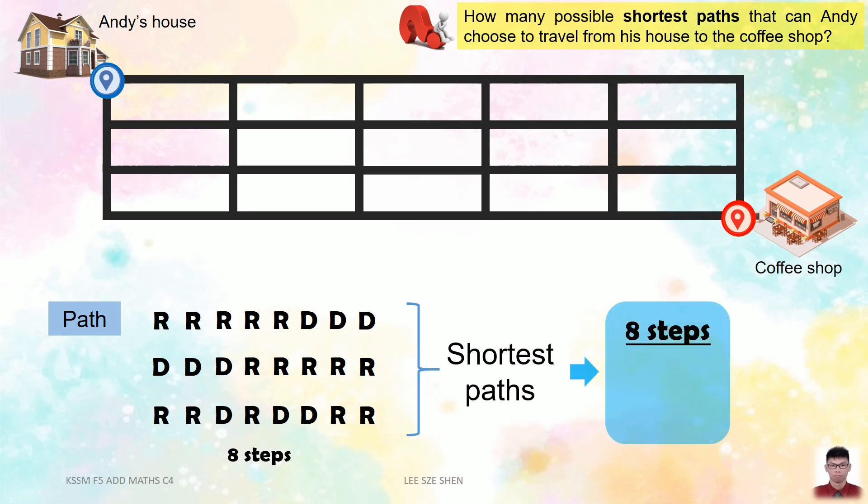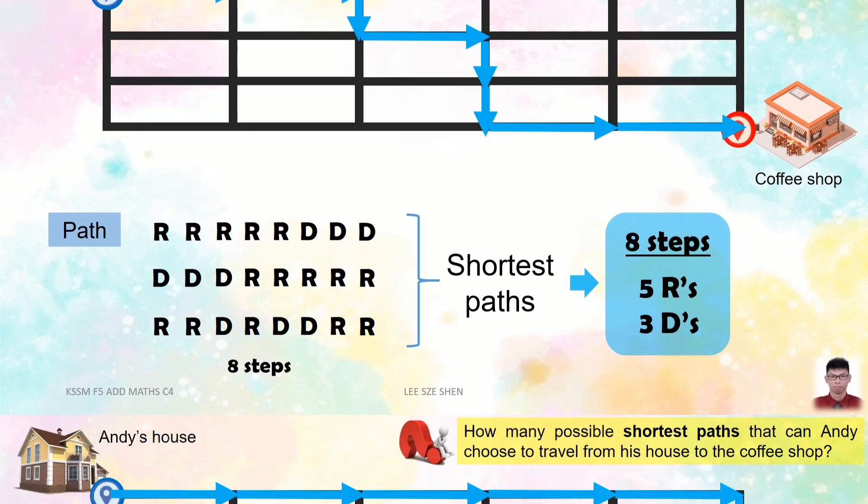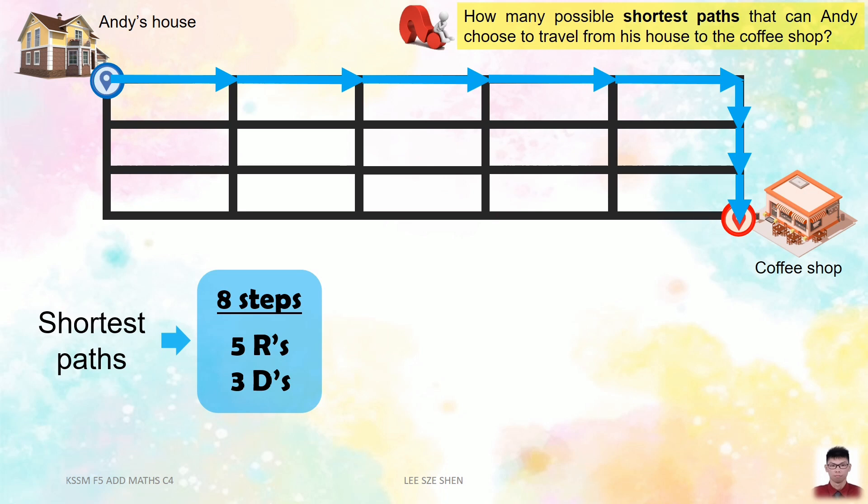These 8 steps always consist of 5 right and 3 down directions, which can be seen from the size of the grid which forms the road. We want to find how many such shortest paths. Consider 8 steps as the positions for the path. We want to arrange 5 R and 3 D, which is 5 right and 3 down directions, among the 8 positions. If we arrange the 8 letters, then we have 8 factorial ways to do so.